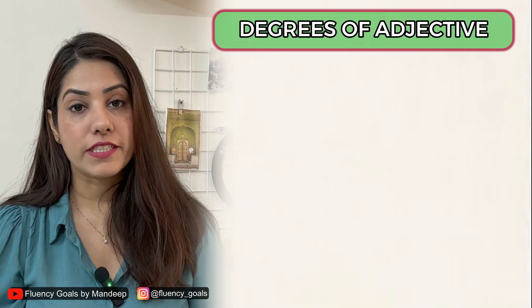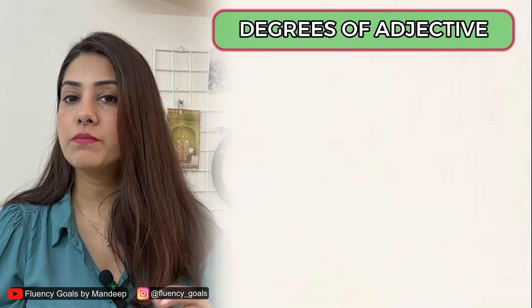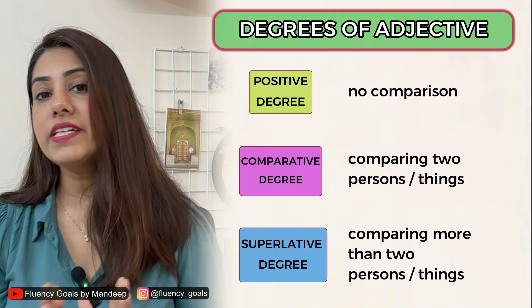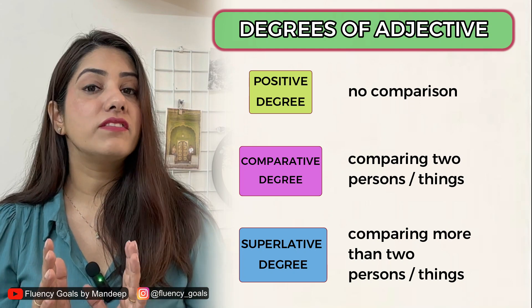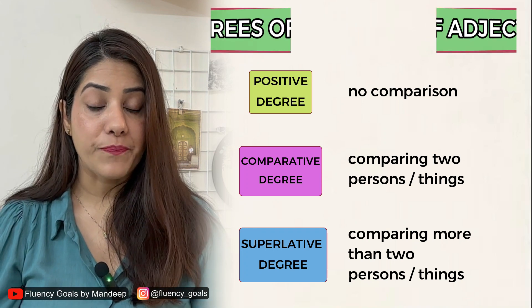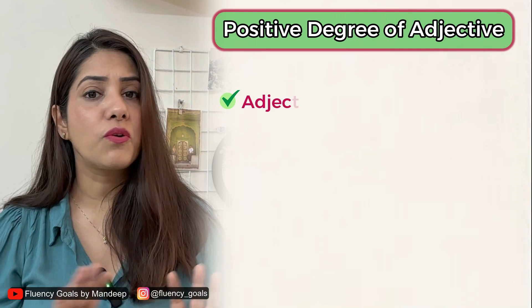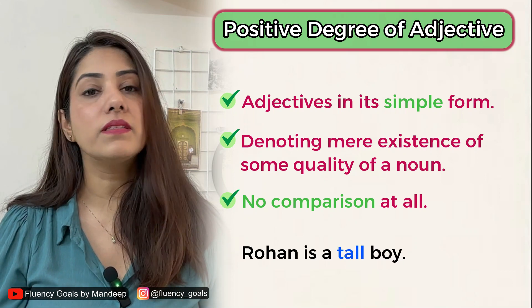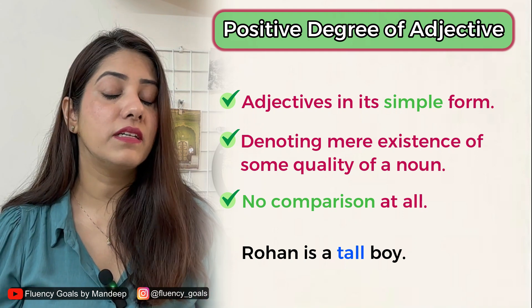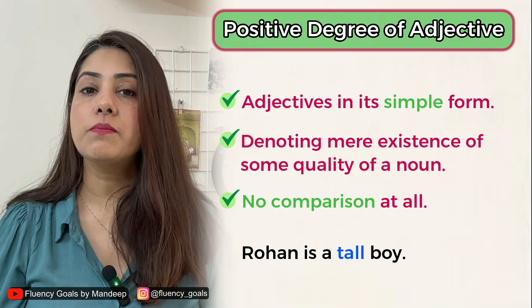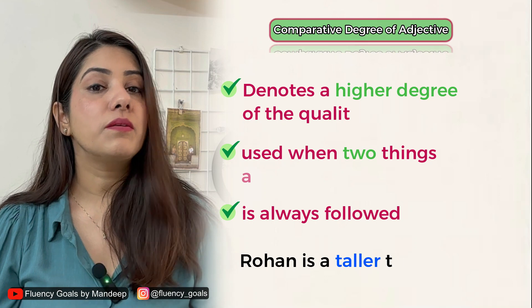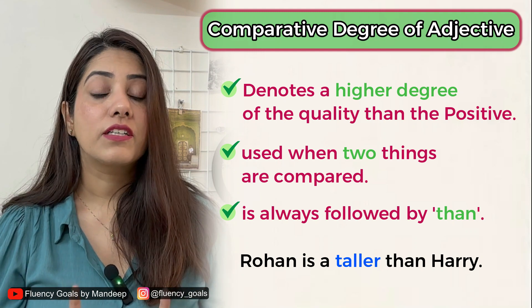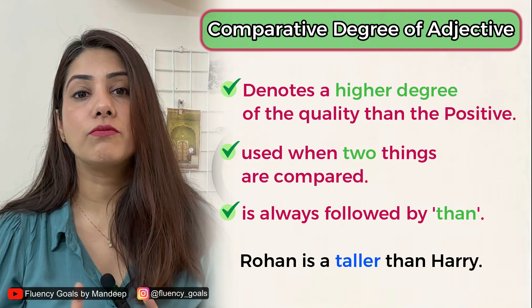Now we move on to degrees of adjective. There are three degrees: positive, comparative, and superlative. The positive degree is a simple adjective not comparing a noun to another — for example, 'Rohan is a tall boy.' The comparative degree compares two nouns or pronouns — 'Rohan is taller than Harry.' The comparative degree is generally formed by adding -er or 'more' to the positive adjective. Comparative adjectives are usually followed by 'than'.